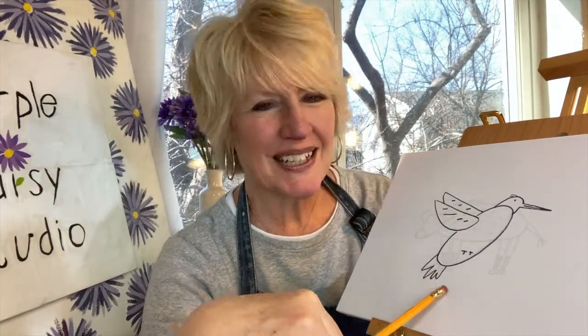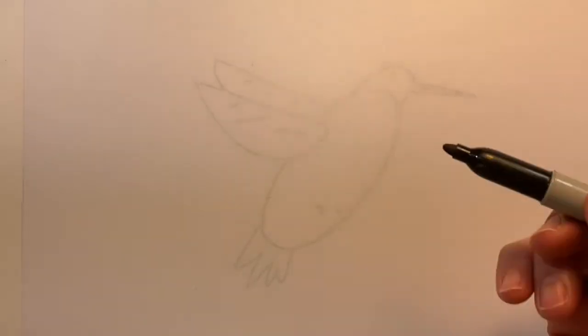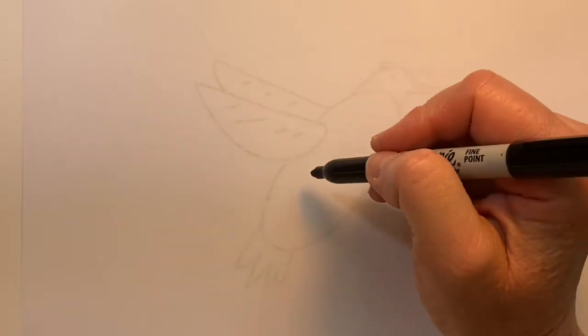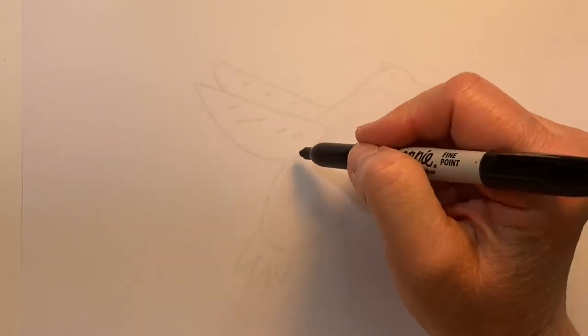We're drawing a hummingbird. Alright, I'll trace on top of a hummingbird I've already created here. And I'm going to start by drawing a slanted oval, but I'm going to leave an opening. I'm going to leave a gap for his wings.